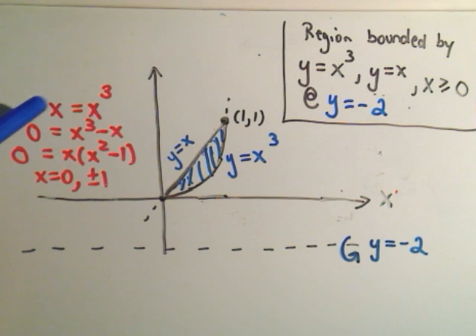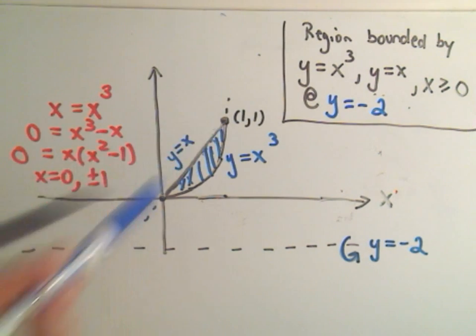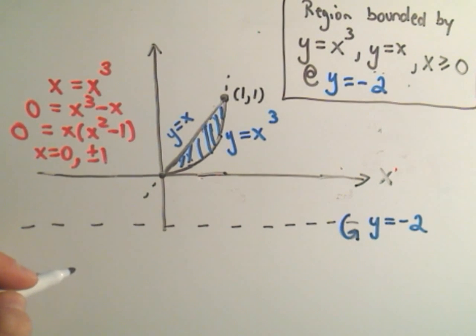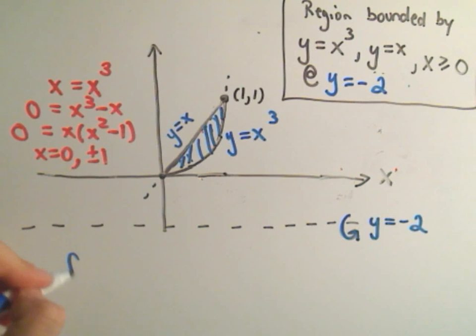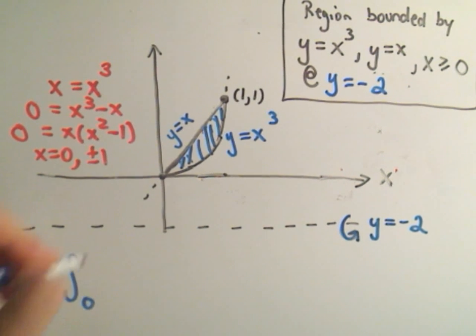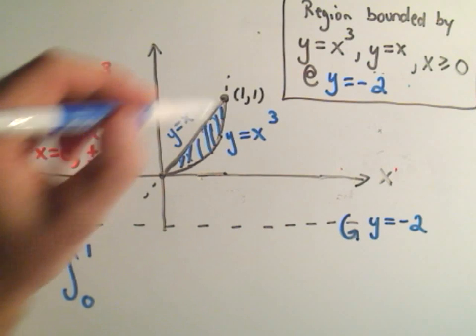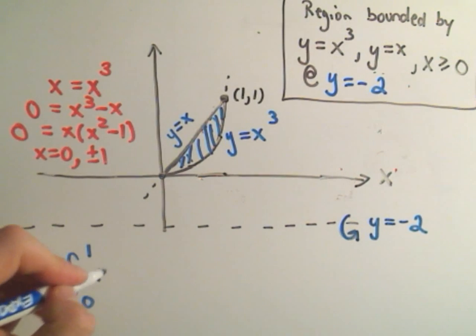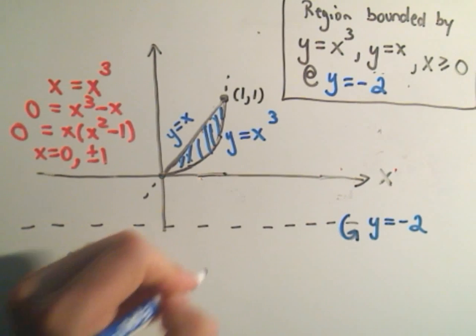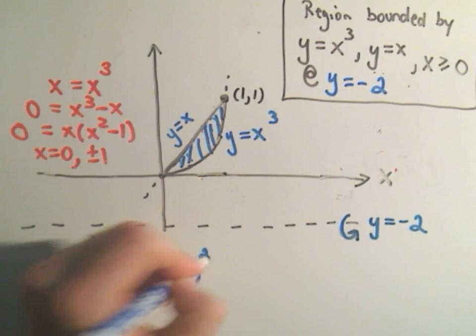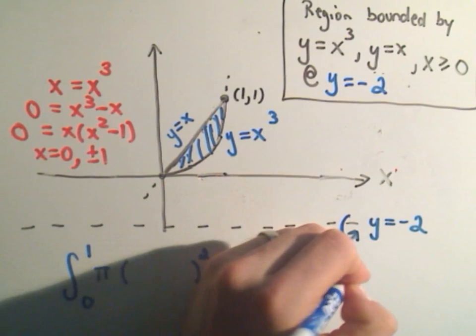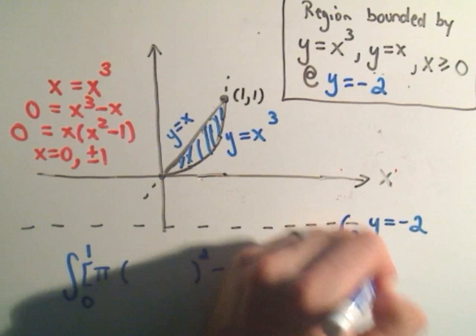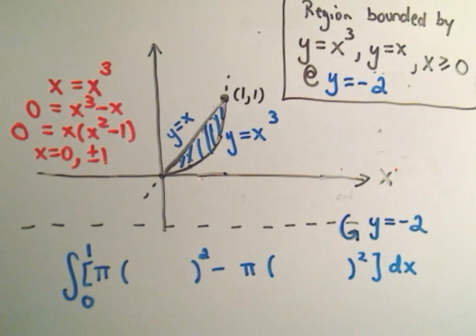In the previous video we set x and x cubed equal to help us figure out our limits of integration. In this problem I'm just going to show you how to set it up. I'm not going to go through all the integration. So the limits of integration are going to be 0 to 1, the smallest x coordinate to the largest x coordinate just like before. And now we're going to have to do pi times our outer radius squared minus pi times our inner radius squared, and then we'll integrate all of that with respect to x.